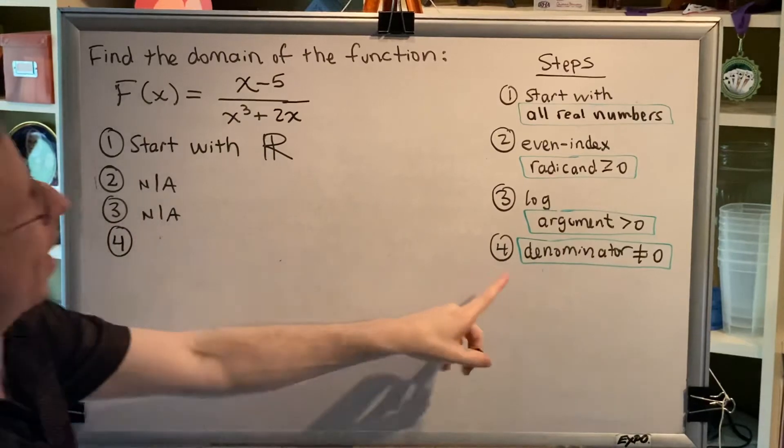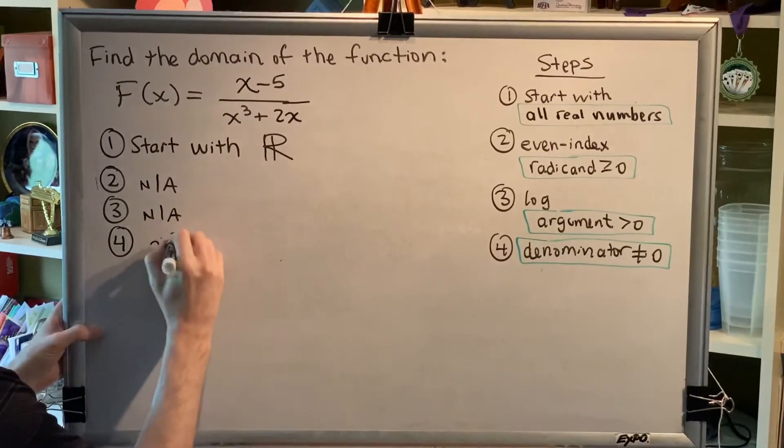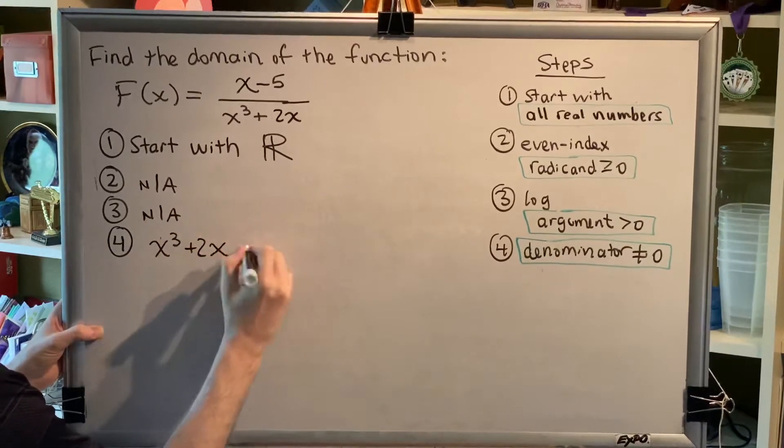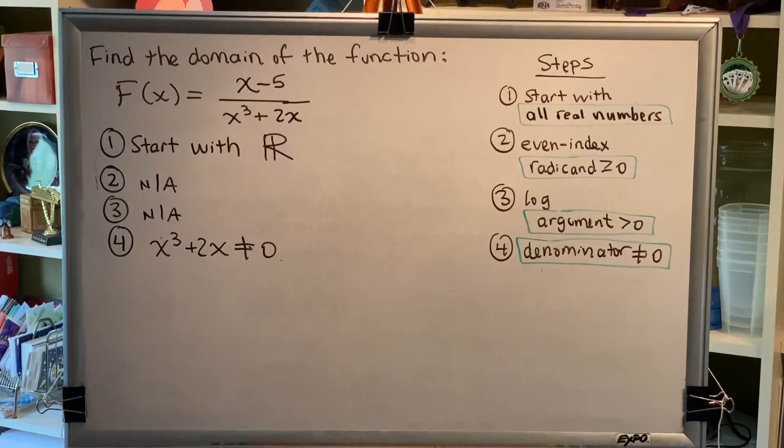Step 4, denominators are not allowed to be 0. So, we do have a denominator, it's x cubed plus 2x, and so we have to solve the inequality, x cubed plus 2x is not equal to 0.